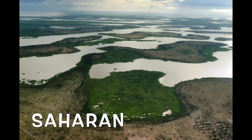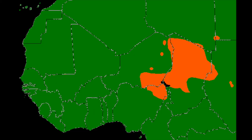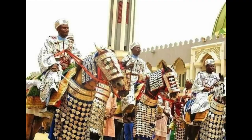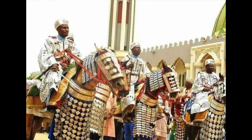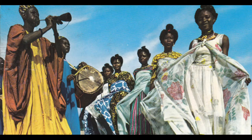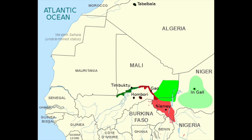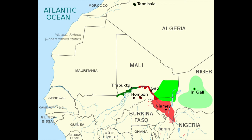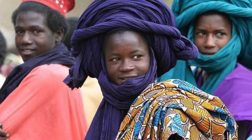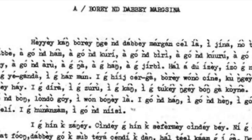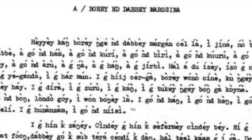Next we have the Saharan group — languages spoken in Chad, Niger, and Northeastern Nigeria. Its biggest language by far is Kanuri, with around 10 million speakers spoken around Lake Chad. And lastly, we have the Songhai branch, which is either a group of closely related languages or a dialect continuum, spoken in parts of Mali, Burkina Faso, Southwestern Niger, and Northern Benin. Altogether, they have around 4 million speakers.